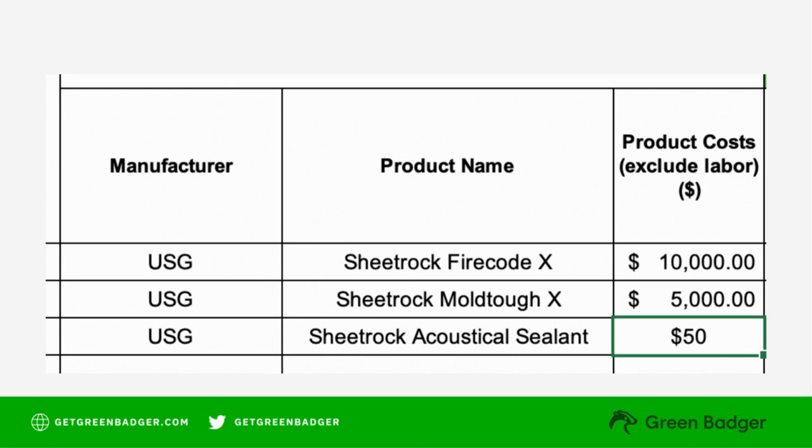In this example, we're using USG and we have two different sheetrock products as well as a sealant. It's very important to break out each specific type of product and the cost associated with each product. You can't just put sheetrock and then a $15,000 lump sum because each product has a different LEED attribute or the potential for different LEED attributes.